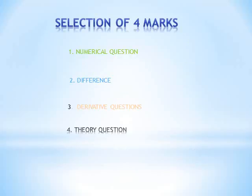For selection of 4-mark questions: first, we select numerical questions, because numerical questions have 4 parts — given data and required, formula, substitution, and calculation — and each section carries 1 mark, so we can easily get 4 marks. Second, we select difference questions, where we can get 4 marks easily with 4 differences in a tabular manner. Third, we select derivative questions, which are step-wise, so we get full marks.